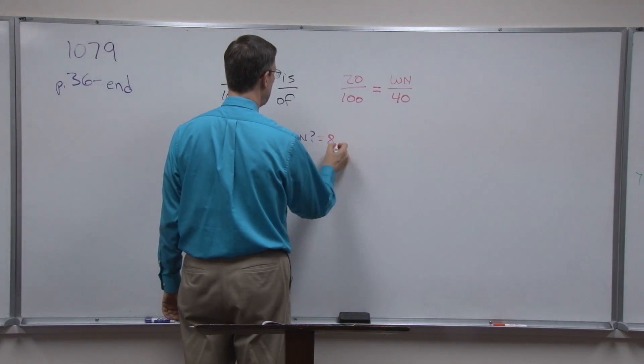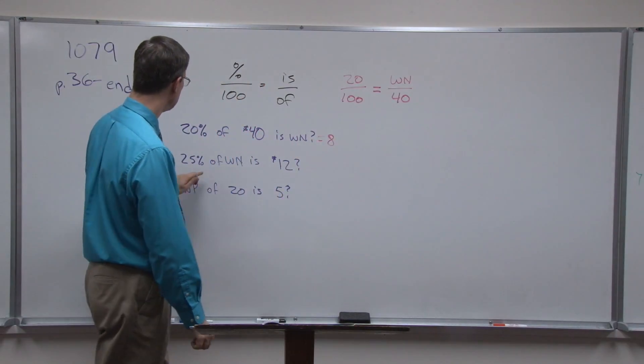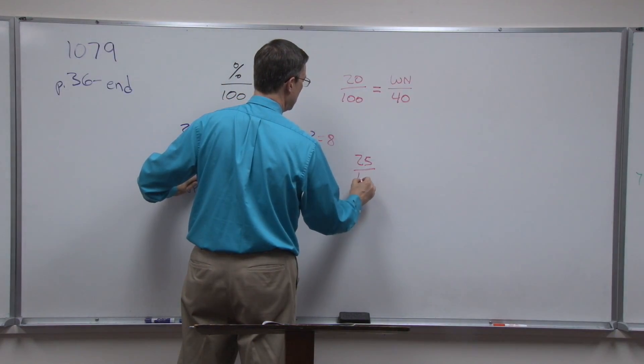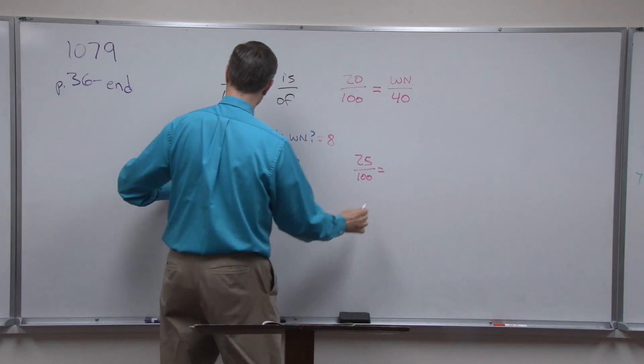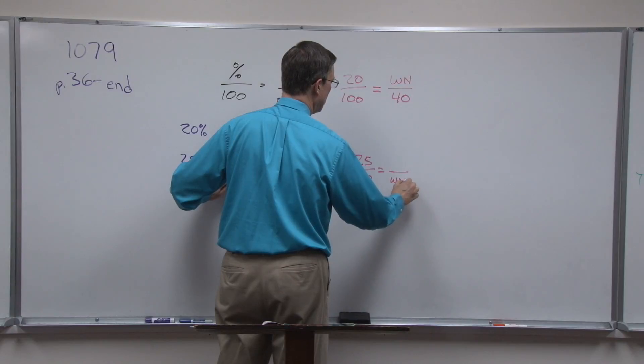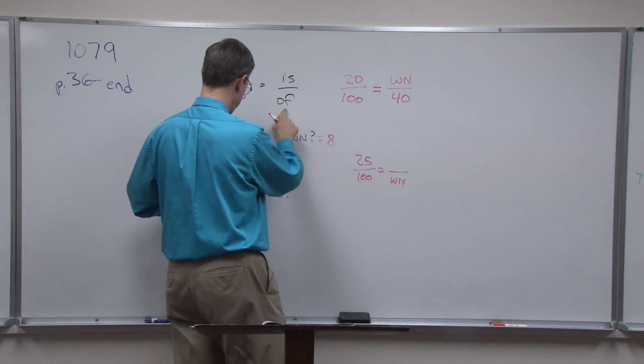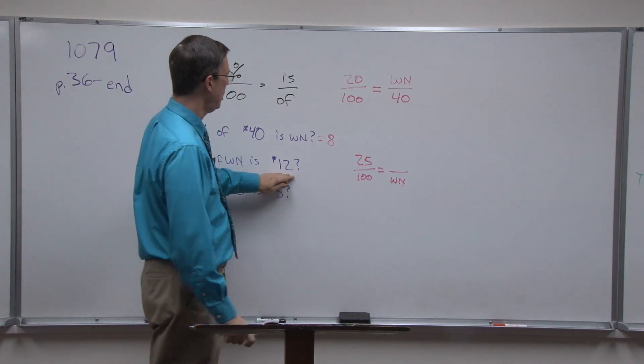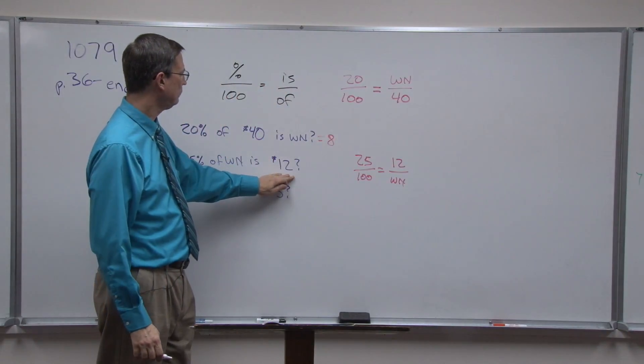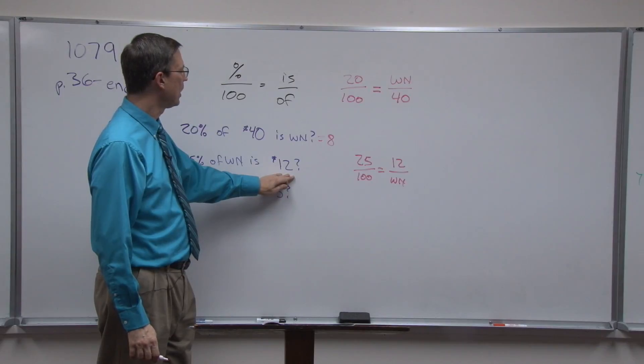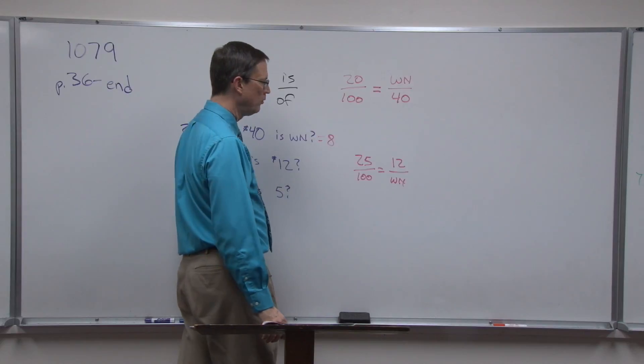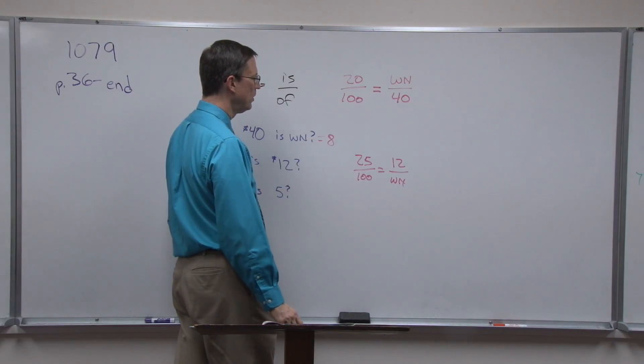Let's try this next one. 25 percent, so we'll do 25 over 100, of what number? So the bottom is the one I don't know. Of what number is 12? So I'll put the 12 up here on the top.